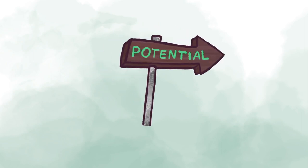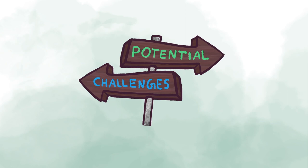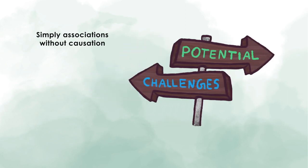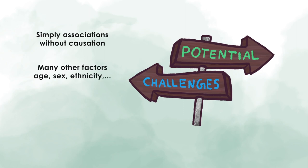While there is great potential in these high-throughput studies, there are also quite some difficulties associated with them. One thing to keep in mind is that often these are simply associations — that doesn't necessarily mean that there is also a causal connection or direct biological relevance to disease. Also, as mentioned, many factors like age, sex, ethnicity, and so on have to be considered. Thus, the interpretation of such human data can be really complicated.